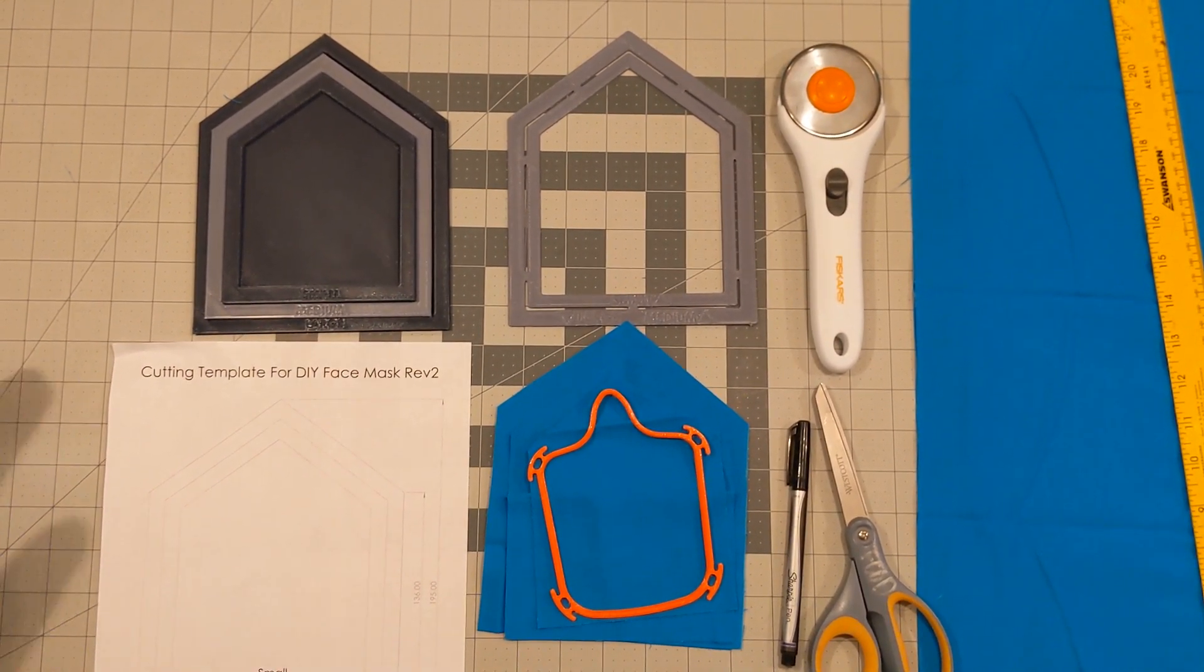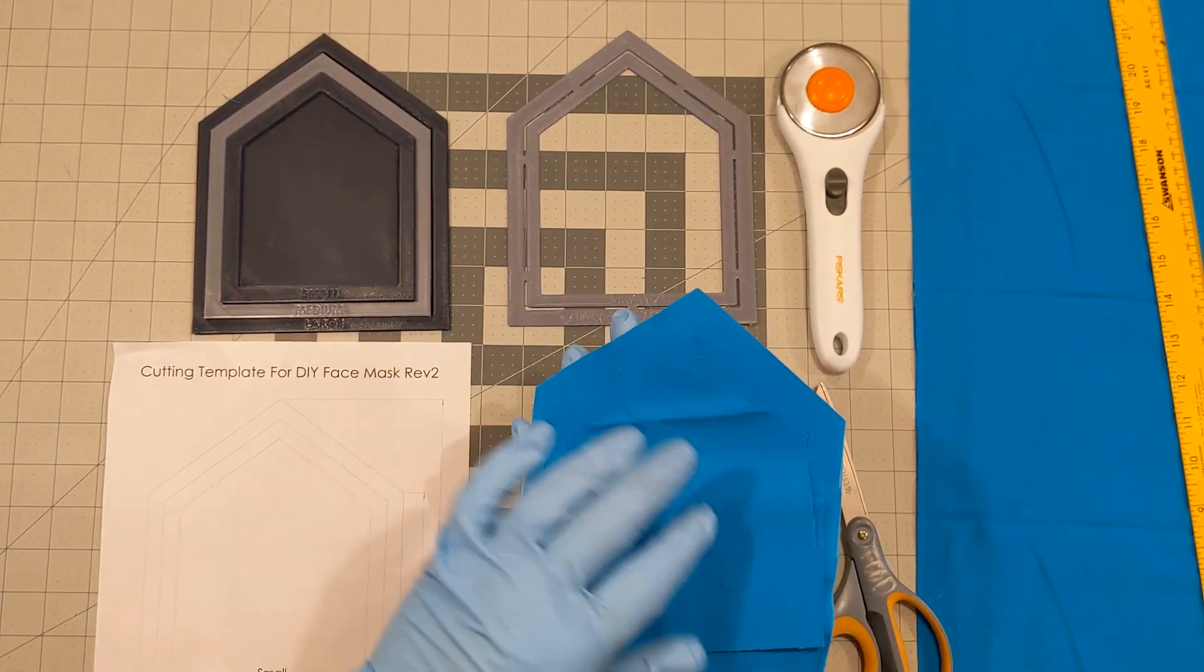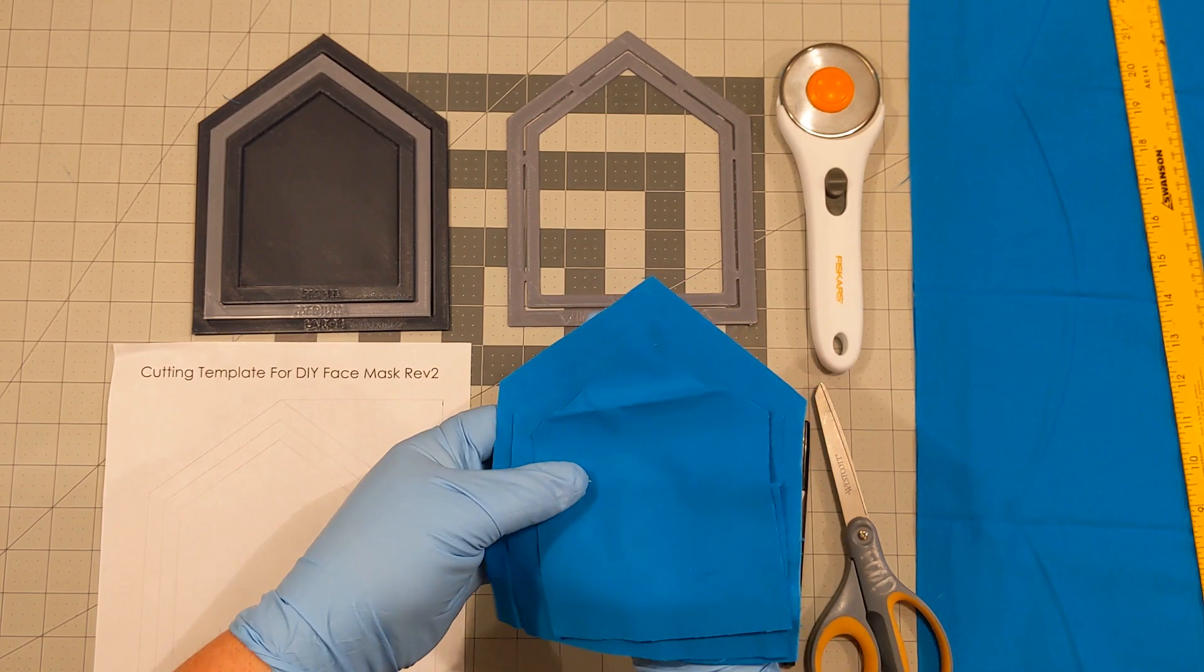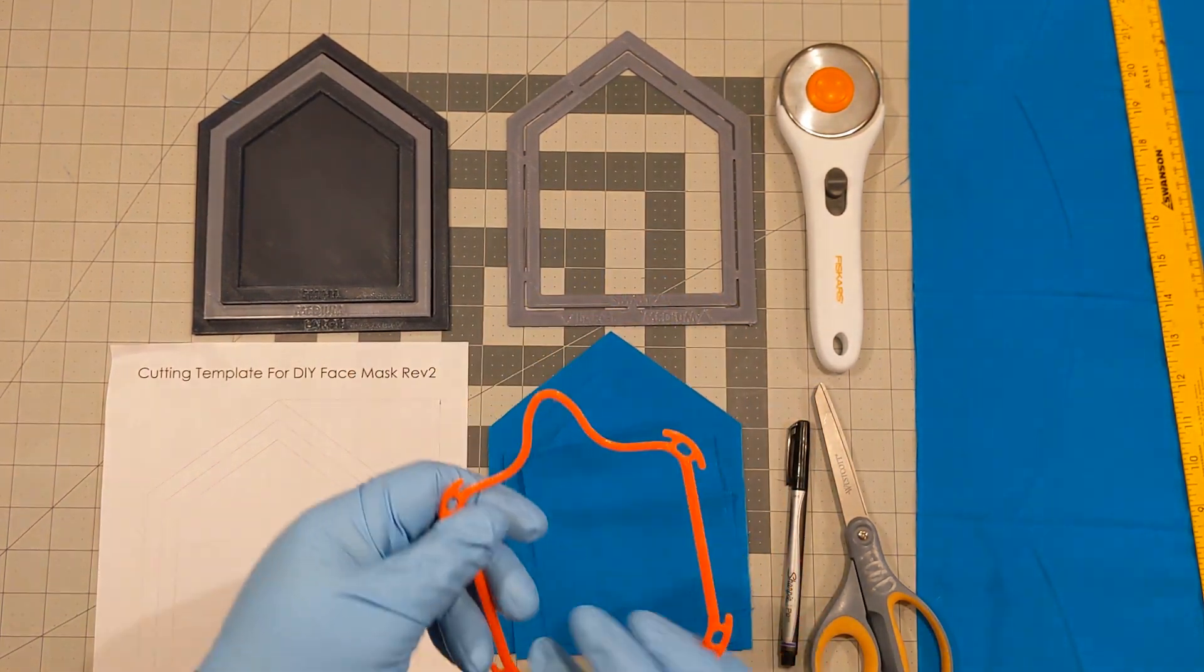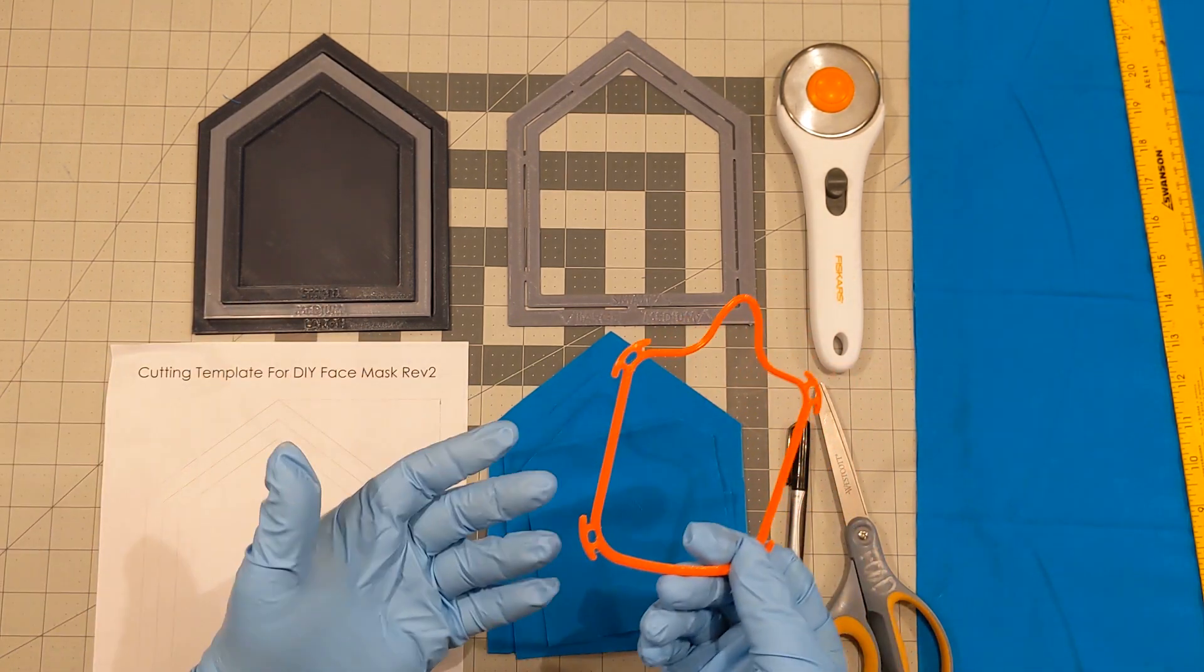Hey everybody, Mark here and I want to make a quick tutorial on how to cut out your filter material for your community face mask frames. Let's get started. You've printed out your frames and now you want to cut out your material. So what do you do next?